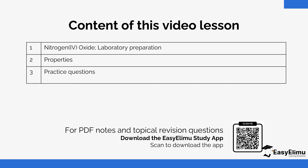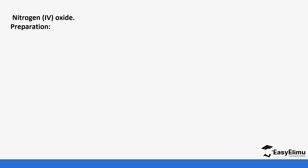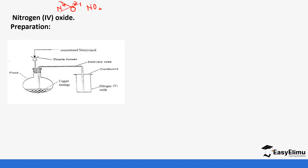We'll look at the laboratory preparation, some chemical and physical properties, and then you'll get a chance to practice on a few questions. For nitrogen 4 oxide, from the name, the formula is derived: nitrogen valence is 4 from the bracket and oxygen valence is 2, so by crisscross you get NO₂.